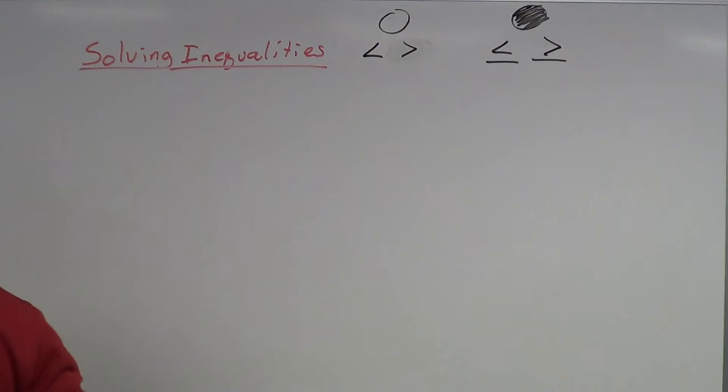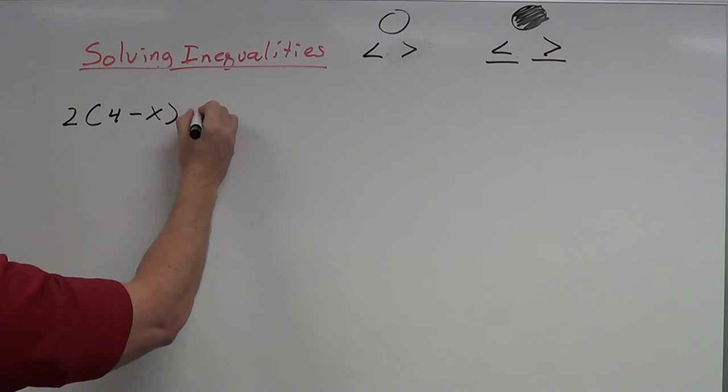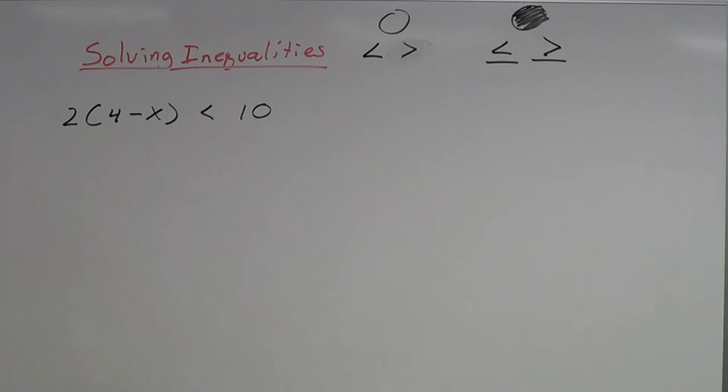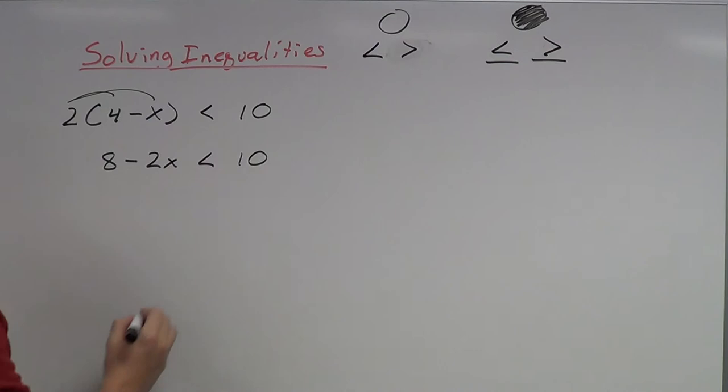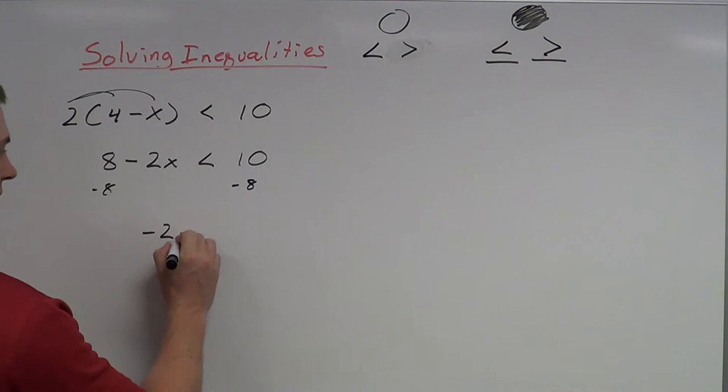Let's do one more example. 2 times the quantity 4 minus x is less than 10. It looks like I've got to do a little distribution first. So 2 times 4 and 2 times x gives us 8 minus 2x is less than 10. Following normal rules, I'm going to subtract 8 from both sides: negative 2x is less than negative 8.